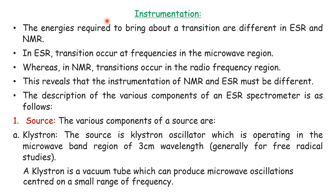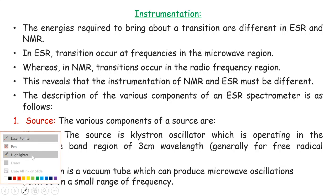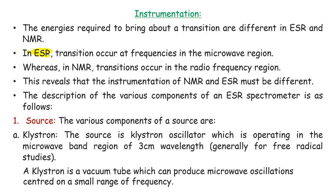The energies required to bring about transitions are different in ESR and NMR. In ESR we require microwave frequency radiations, whereas in NMR we require radiations from the radio frequency region. This reveals that the instrumentation of NMR and ESR must be different because the sources are different. Now we will see the various components of the ESR spectrophotometer.